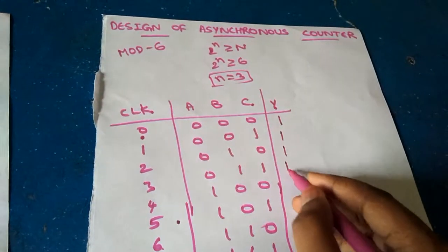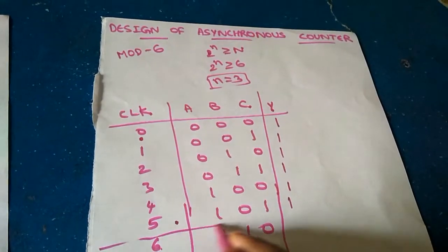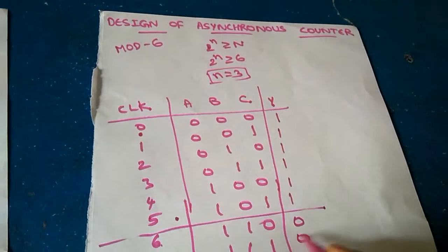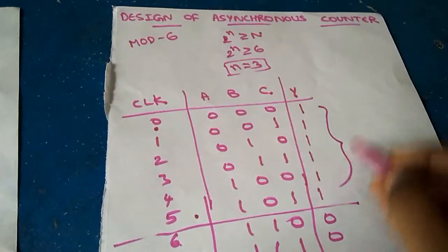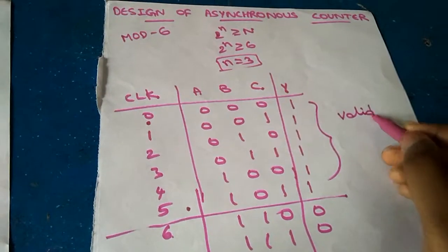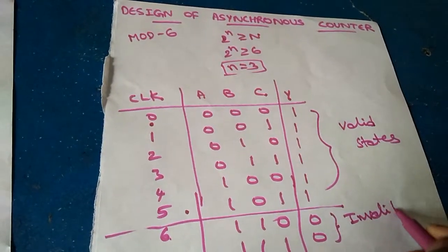So as we are discussing about mod-6 asynchronous counter, before 6 all the outputs are 1 and after at 6 and after 6 the outputs are 0. So these are called as valid states and these are called as invalid states.